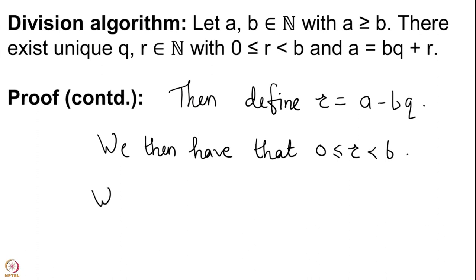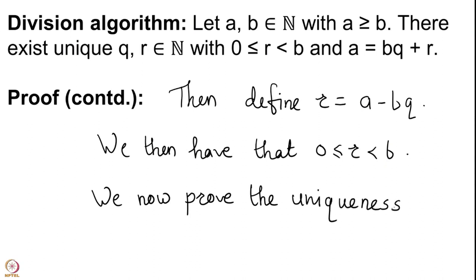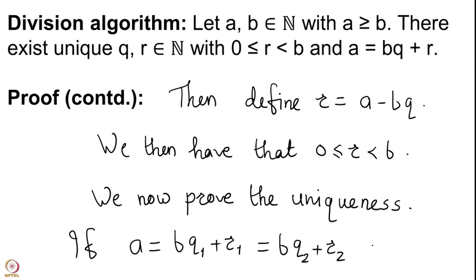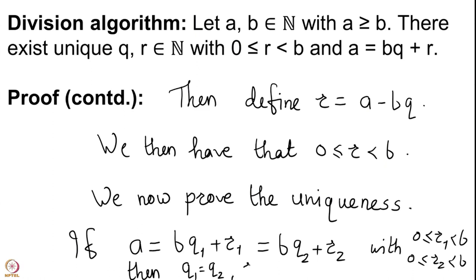Now we need to show uniqueness. To show uniqueness, we start by assuming that there are two such pairs of q and r, and we have to prove that the corresponding q's are the same and the corresponding r's are the same. So if a equals b·q₁ plus r₁ and also equals b·q₂ plus r₂, with 0 ≤ r₁ < b and 0 ≤ r₂ < b, then we must show q₁ equals q₂ and r₁ equals r₂.